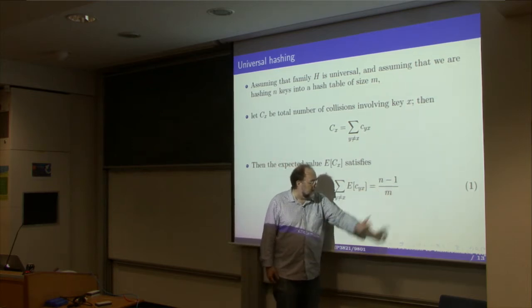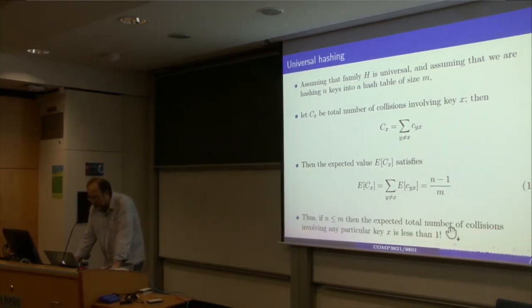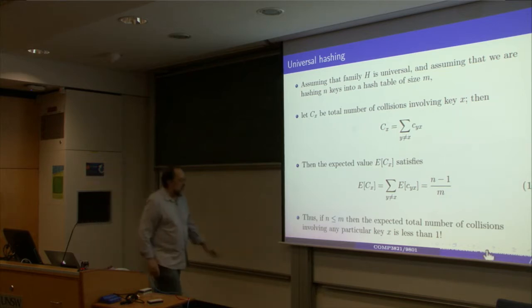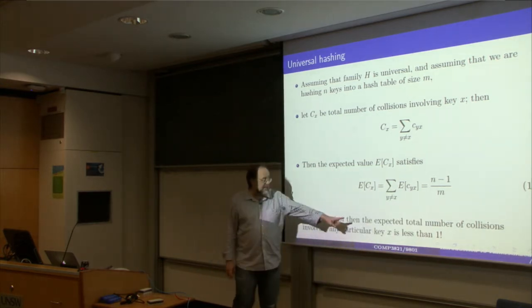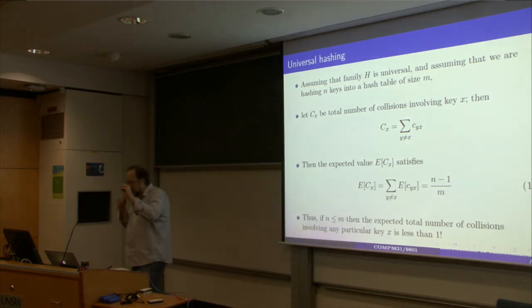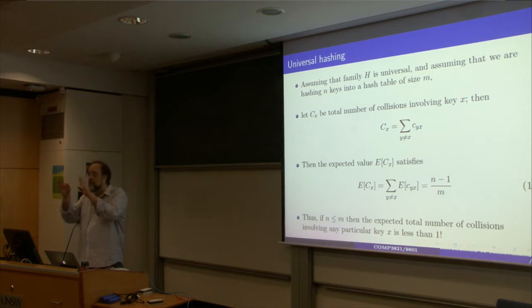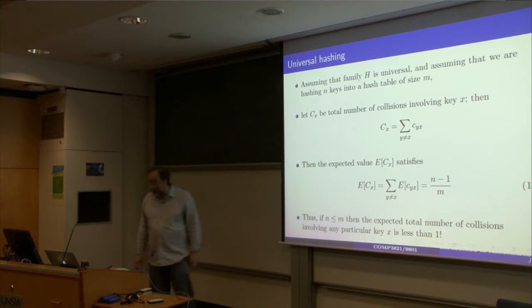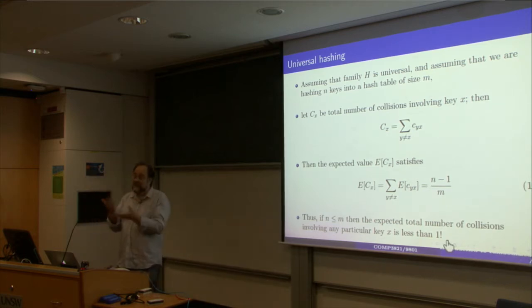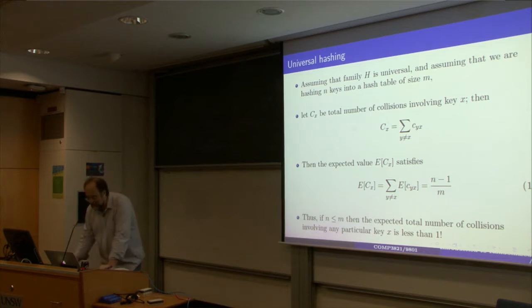An important consequence: if you are hashing fewer or equal number of keys than the number of slots — that is, n ≤ m — then the expected total number of collisions involving any particular key x is less than 1. This means that if you look at any key and the slot it sits in, there will on average be less than one collision. Universal families try to, on average, minimize the total number of collisions in the table — this is why we like them.